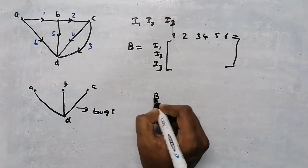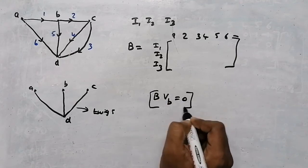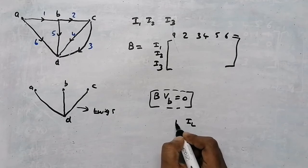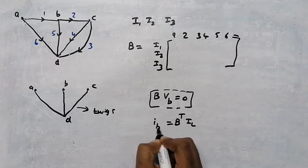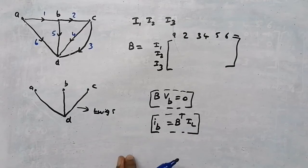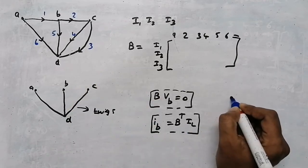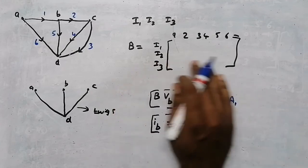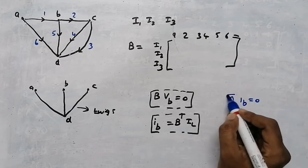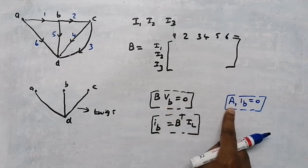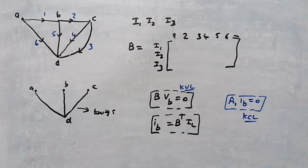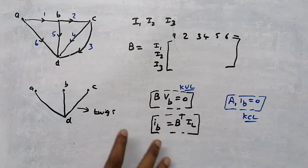There are two key properties. First: tie-set matrix B multiplied by branch voltage equals 0 — this is a property of KVL. Second: B^T multiplied by loop current gives branch current. For comparison, the reduced incidence matrix A1 (incidence matrix with one row eliminated) multiplied by branch current equals 0 — this is a property of KCL. In the next video, we will do a problem based on all these concepts: incidence matrix, tie-set matrix, branch current and all.